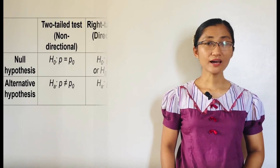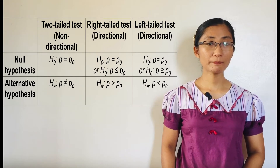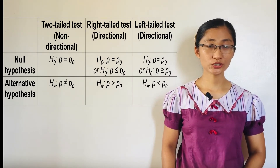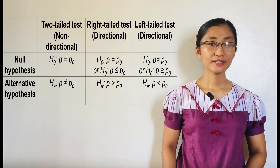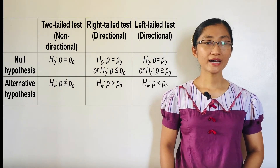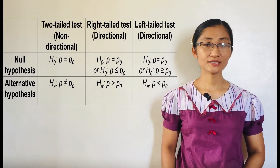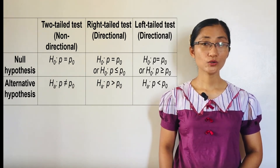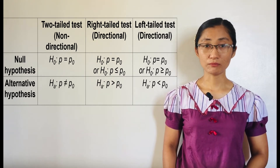In testing hypotheses on population proportion, we also start with stating the null and alternative hypotheses. The null hypothesis states that the population proportion, P, is equal to the hypothesized proportion, P sub O. It is a statement of equality. Whereas the alternative hypothesis states that P is less than, greater than, or not equal to P sub O.